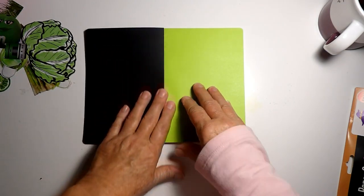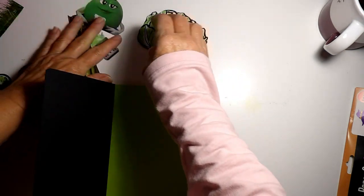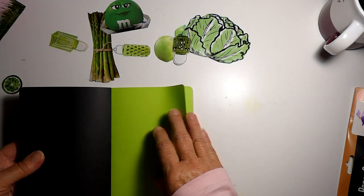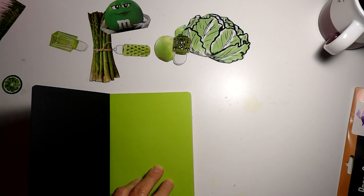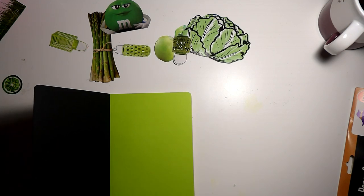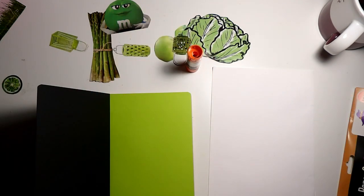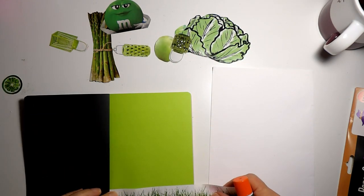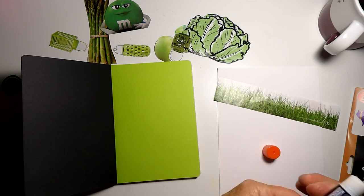So I'm gonna start with my first page here, and I found all these little green things, images, that I can put in this first journal, or the first page of this new journal. So let's figure out how we're gonna arrange them. I gotta get my glue paper out, and my glue stick, and I was thinking of putting the grass across the bottom, just like this.